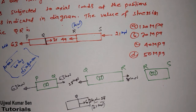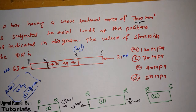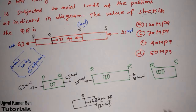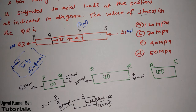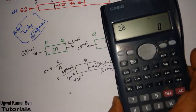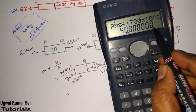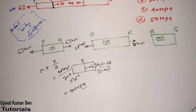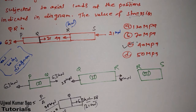We can now find the answer. The cross-sectional area given is 700 mm². Stress sigma equals force divided by area. The force is 28 kilonewtons and the area is 700 × 10⁻⁶ m². So: 28 × 10³ divided by 700 × 10⁻⁶ gives 40 megapascals. Option C is the right answer.